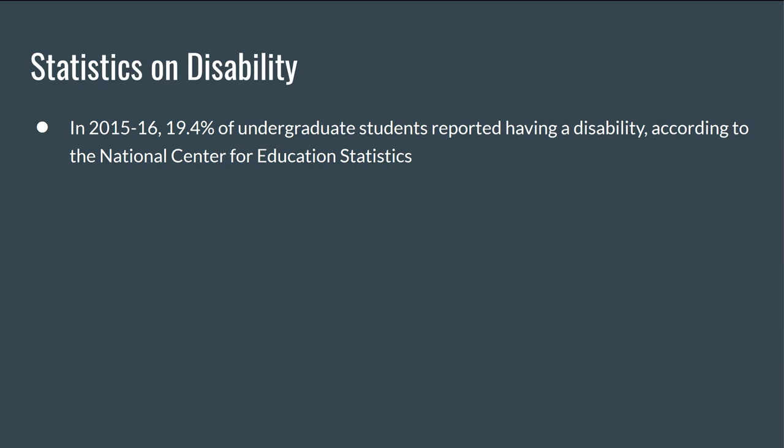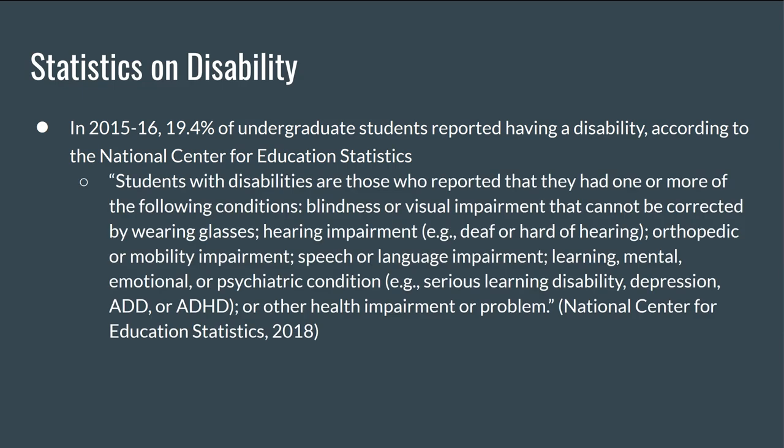This number refers to students who reported one or more of the following conditions: blindness or visual impairment that cannot be corrected by wearing glasses; hearing impairment — that is, deafness or hard of hearing; orthopedic or mobility impairment; speech or language impairment; learning, mental, emotional or psychiatric condition — that is, serious learning disability, depression, ADHD or ADD; or other health impairment or problem.